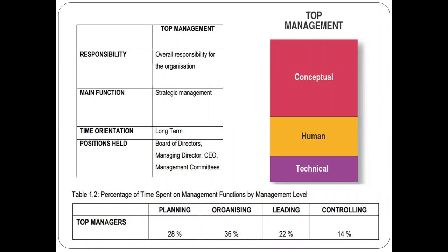Top-level managers spend most of their time on planning and organizing. Planning is where they create strategies; organizing is where they secure the resources needed to execute those strategies. Leading and controlling are less prominent at this level, as their core function is thinking ahead and setting up the organization for success.